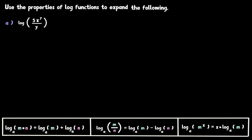There are three things going on inside the log function. We are dividing, we are multiplying, and we also have an exponent. Whenever we have multiple combinations, it is better to always start with the division. We have a property that says anytime we are dividing inside the logarithm, we can expand it as the numerator minus the denominator.